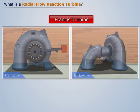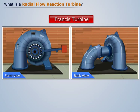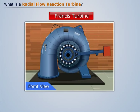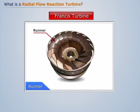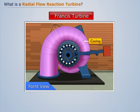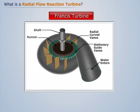In a Radial Flow Reaction Turbine, water enters a spiral-shaped casing. This casing encloses the runner. The water, after passing through the casing, flows through the runner in a radial direction.